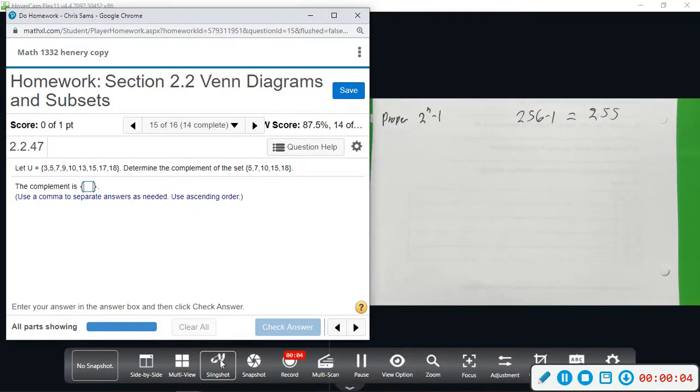Alright, number 15. We have U, the universal set is 3, 5, 7, 9, 10, 13, 15, 17, 18, and then we want to determine the complement.